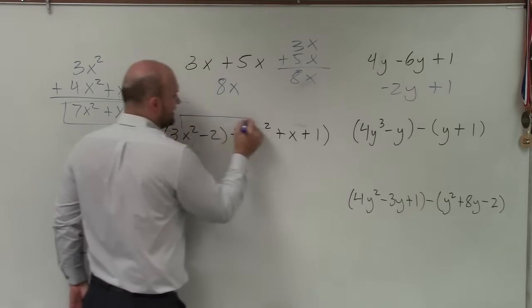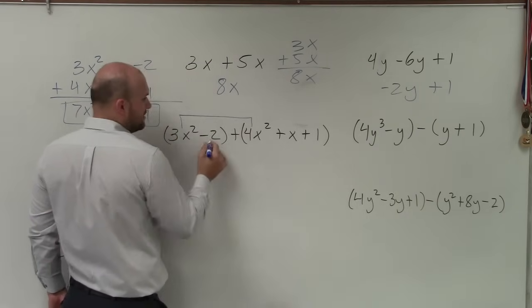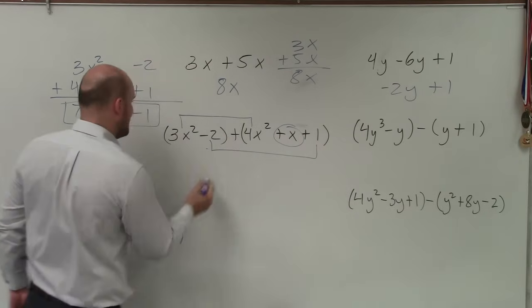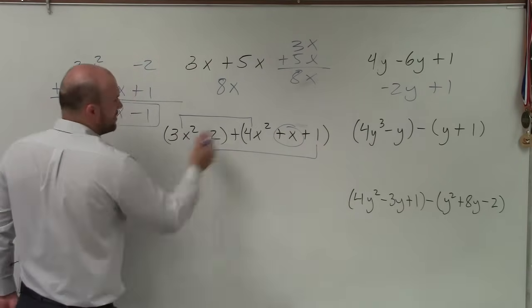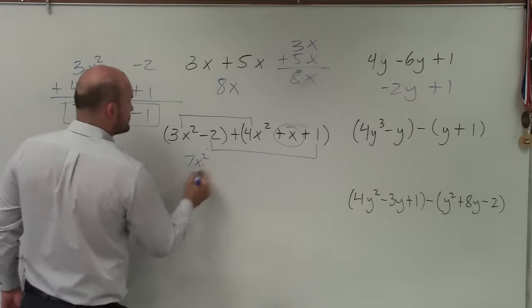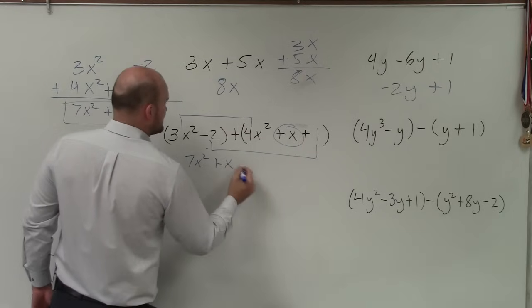The other way we do it is just kind of connect them. And then the x has nothing to combine. So I can say 3x squared plus 4x squared is 7x squared, plus x minus 1.